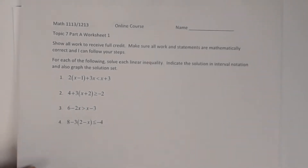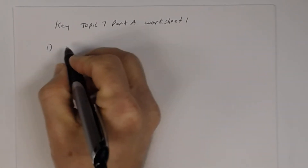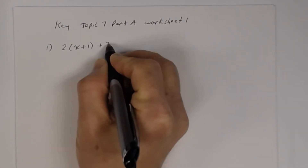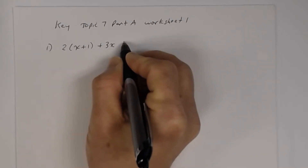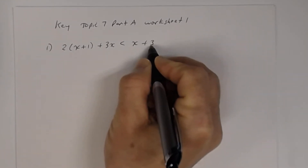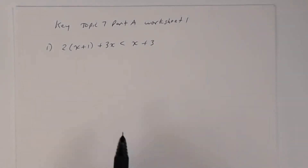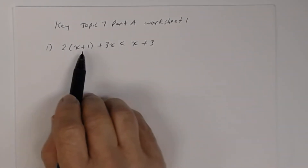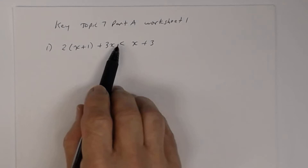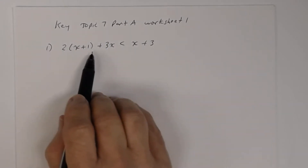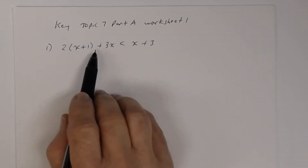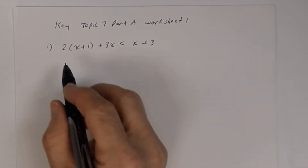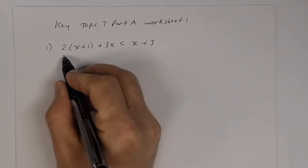Number one: we have 2 times (x plus 1) plus 3x is less than x plus 3. You want to find the solutions that will satisfy this linear inequality. The left side has a parenthesis, so we want to use the distributive property first.